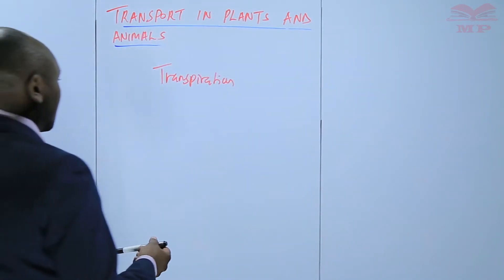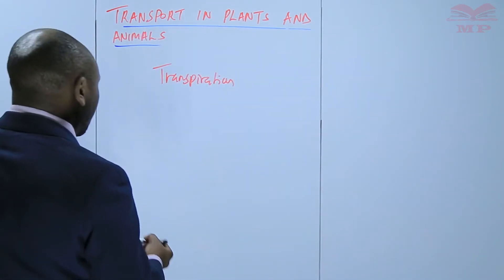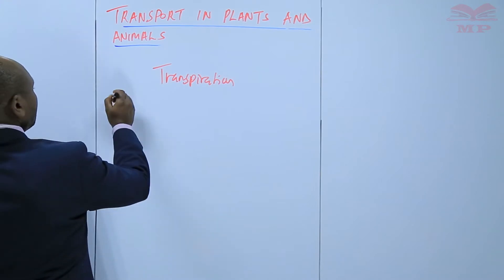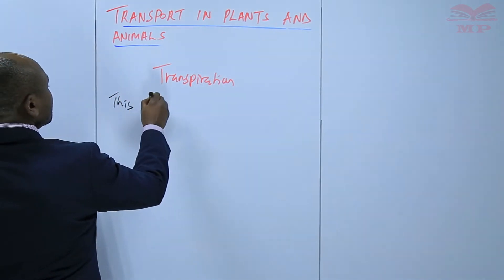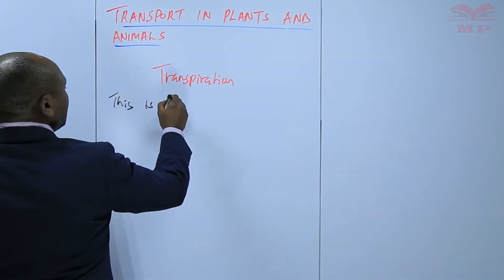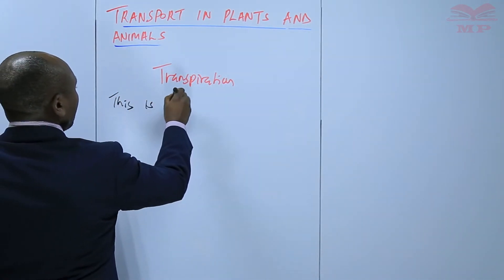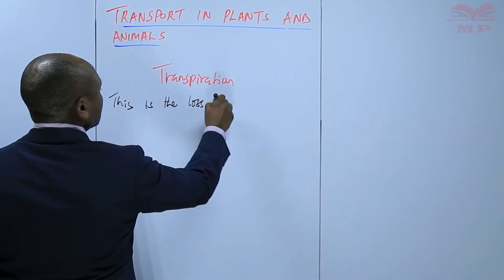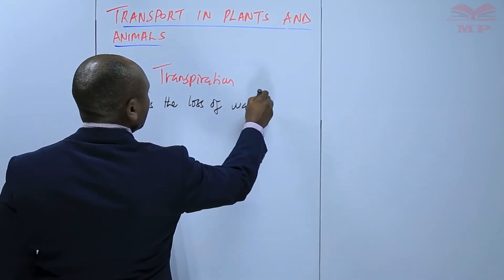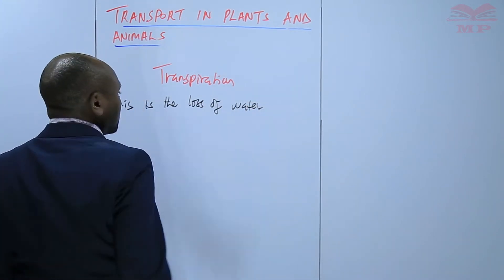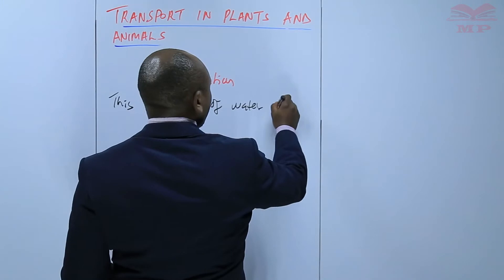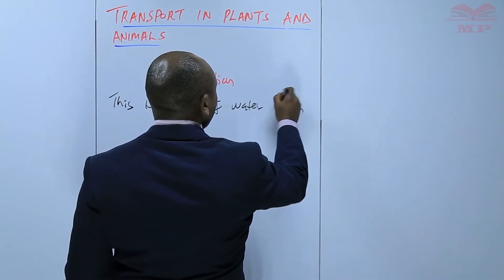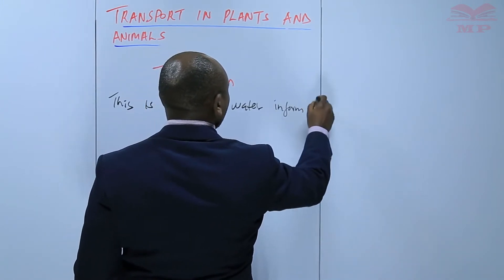So basically, I will start by defining transpiration. Transpiration is the loss of water in the form of water vapor to the atmosphere.